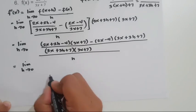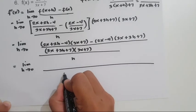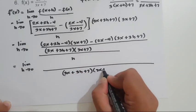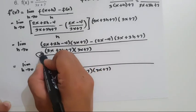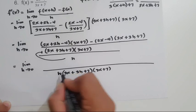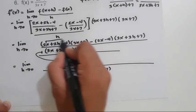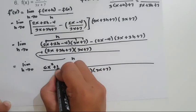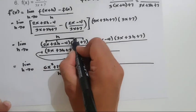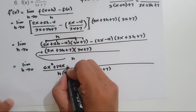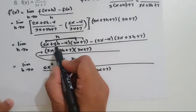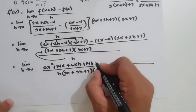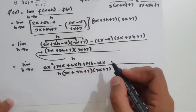Now let us expand. The denominator is h times (3x plus 3h plus 7)(3x plus 7). Expanding (2x plus 2h minus 4)(3x plus 7): 2x times 3x is 6x squared, 2x times 7 is 14x, 2h times 3x is 6xh, 2h times 7 is 14h, negative 4 times 3x is negative 12x, negative 4 times 7 is negative 28.